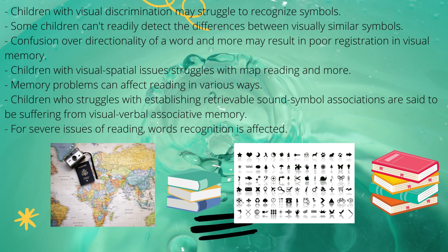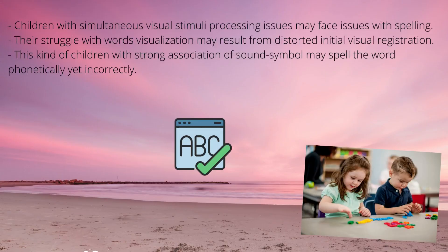Children with visual spatial problems usually struggle with map reading and more. Memory problems can also affect reading in various ways, such as inability to remember the visual shapes of letters and words. Children who struggle with establishing retrievable sound-symbol associations are said to be suffering from visual verbal associative memory difficulties, and therefore are unable to associate the sound with what is heard or seen. For serious issues of reading, word recognition is affected, which can also affect sight vocabulary acquisition.